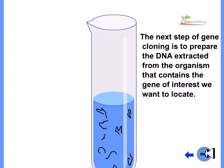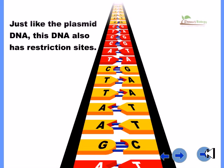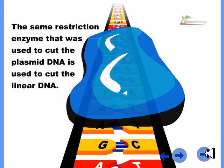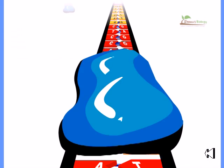The next step of gene cloning is to prepare the DNA extraction from the organism that contains the gene of interest we want to locate. Just like the plasmid DNA, this DNA also has restriction sites. The same restriction enzyme that was used to cut the plasmid DNA is used to cut the linear DNA.